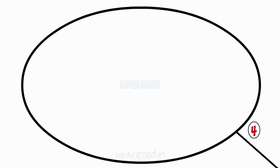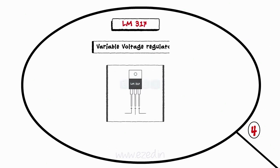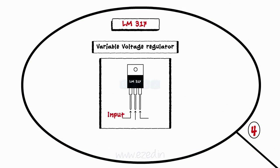Lastly, we studied LM317 which is a variable voltage regulator. It has three terminals as input, output and adjust.